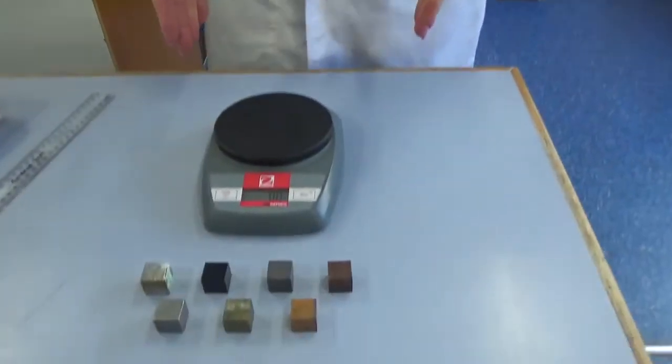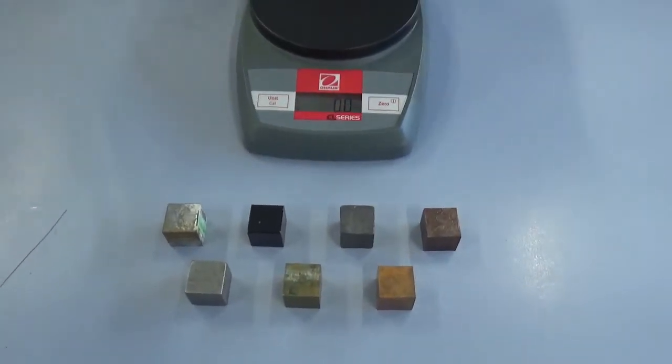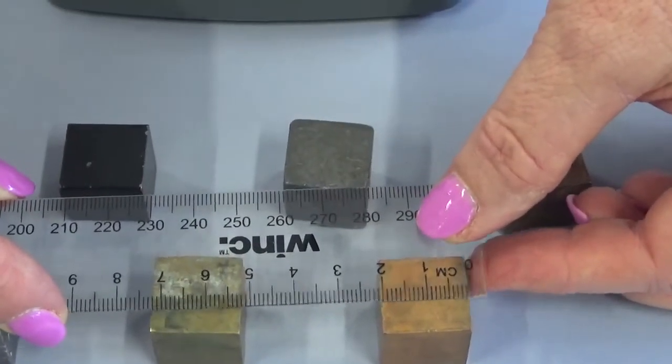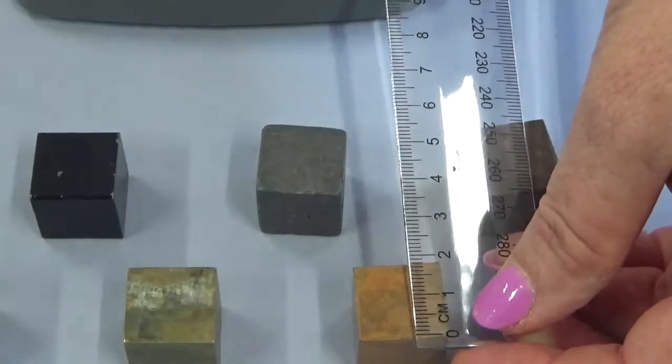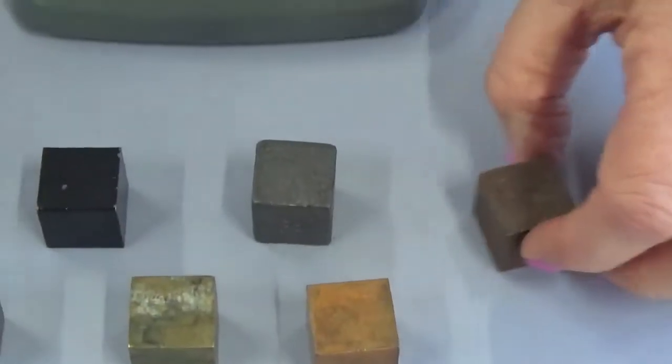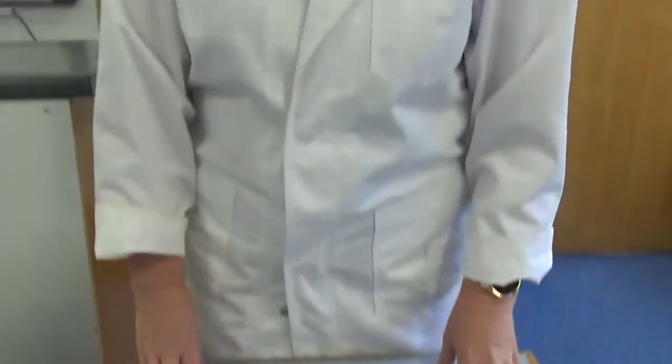So if we look down here by my balance, we will see the density cubes. Now the density cubes are made of lots of different materials. Now I'm going to measure the density cube. You can see that the length and the width and the height of the density cubes are 2 centimetres. So it's important to write that down on your sheet. The length is 2 centimetres, the width is 2 centimetres, the height is 2 centimetres.